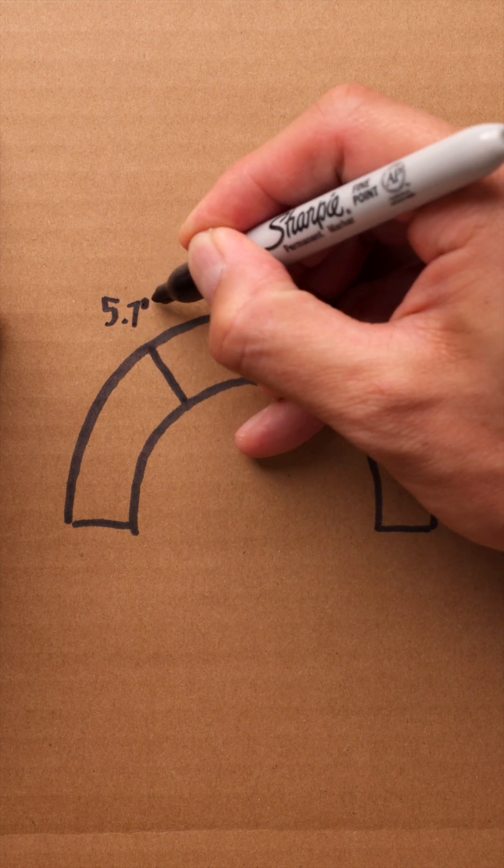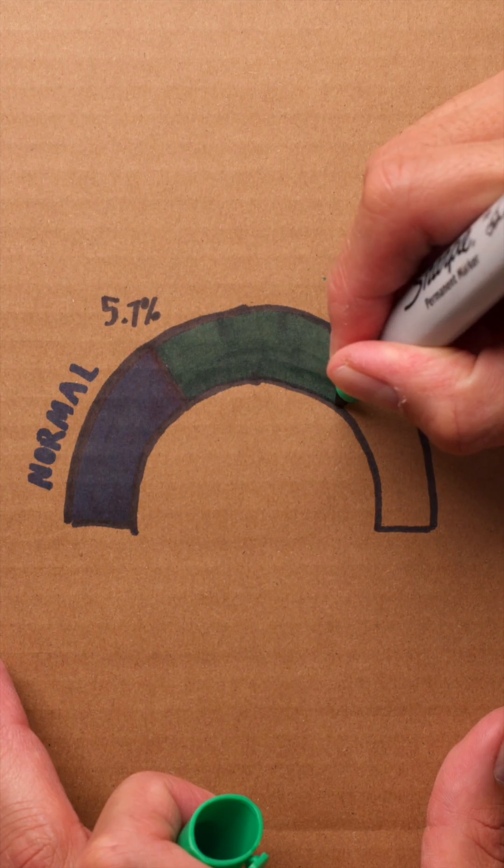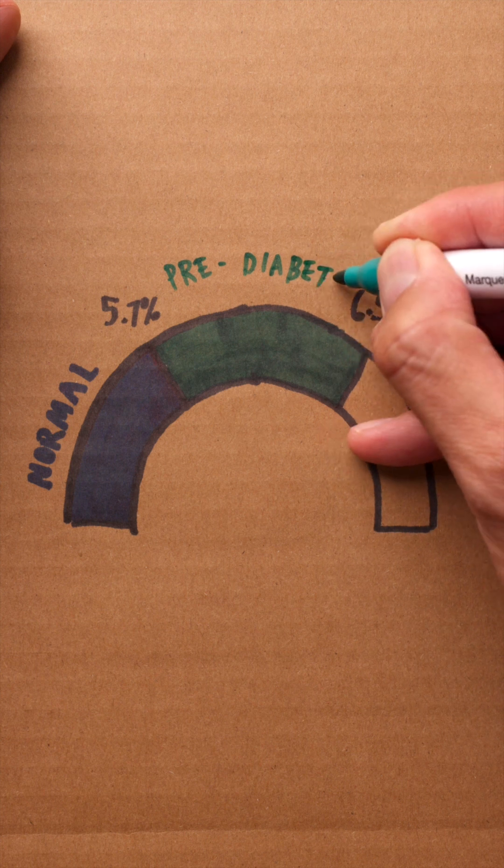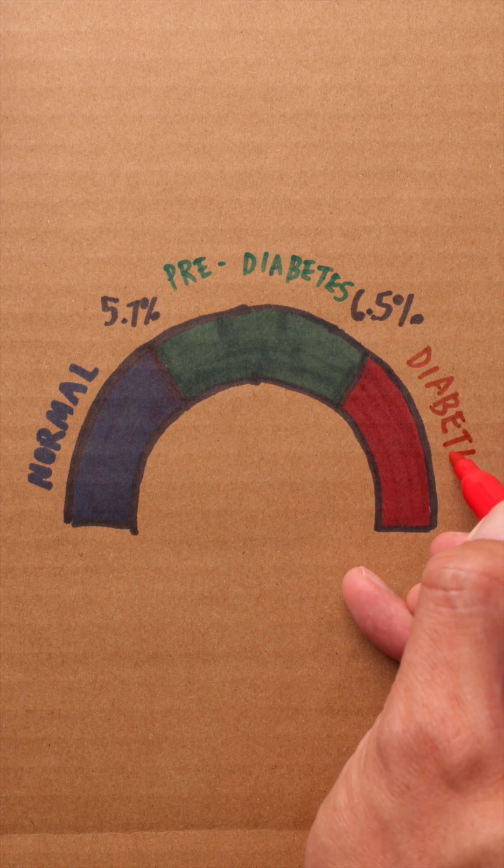According to the American Diabetes Association, below 5.7% is considered normal, between 5.7% and 6.5% is prediabetes, and anything above 6.5% indicates diabetes.